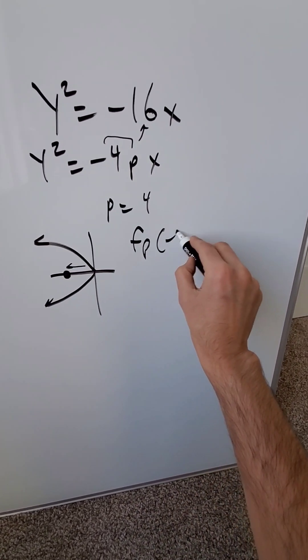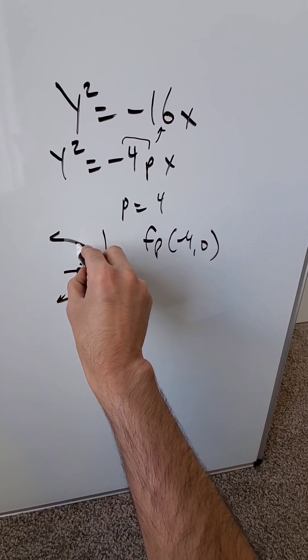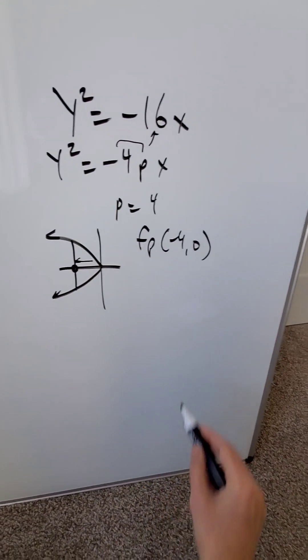The focal point you know would be minus 4 comma 0. The latus rectum is a segment of a parabola going from one end to the other end but always through the focal point.